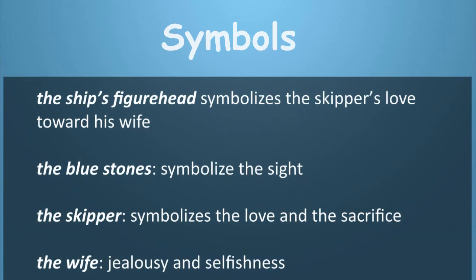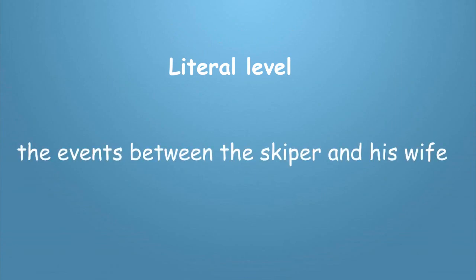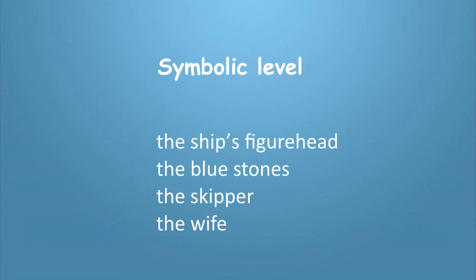So here, the ship's figurehead symbolizes the skipper's love toward his wife. The blue stones symbolize sight — the ability to see and avoid danger. The skipper symbolizes love and sacrifice, while the wife symbolizes selfishness. 'The Blue Stones' is an example of an allegory that functions on two levels: the literal level of the skipper and his wife's story, and the symbolic level conveyed through these symbols within the story.